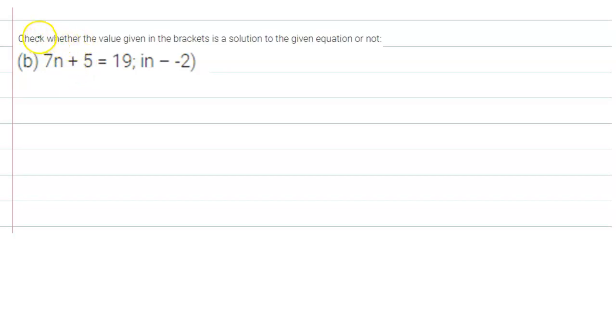Hello everyone, the given question is check whether the value given in the bracket is the solution to the given equation or not. So write down the given equation: 7n plus 5 equals 19, and the value of n which is given to us is minus 2.